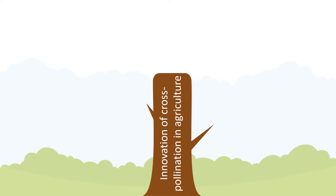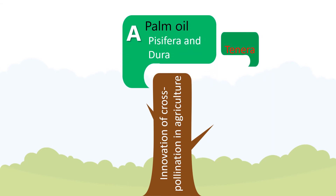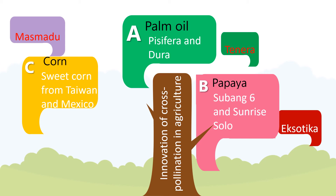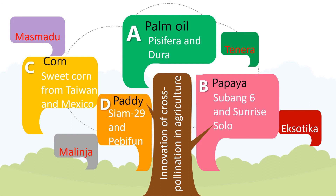The application of cross-pollination in agriculture has been widely used to produce better crops with higher quality. For example, palm oil — parent plants Pisifera and Dura produce the hybrid plant Tenera. For papaya, Subang 6 and Sunrise Solo produce the hybrid Exotica. The parent plants for corn are sweet corn from Taiwan and Mexico, producing the hybrid Mas Madu. For paddy, Siam 29 and Pebifan produce Malinja Paddy.